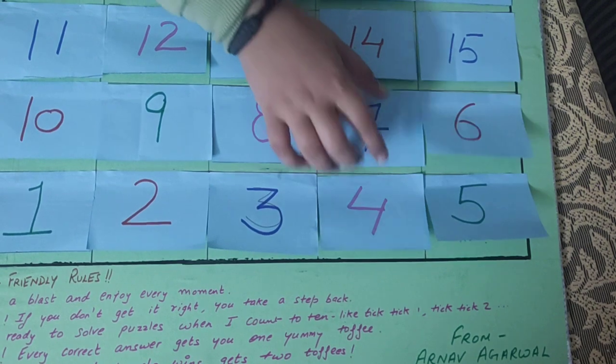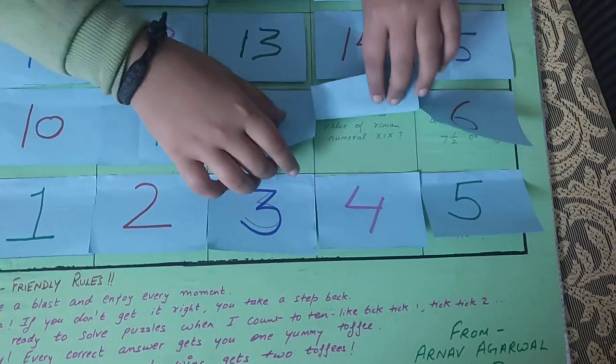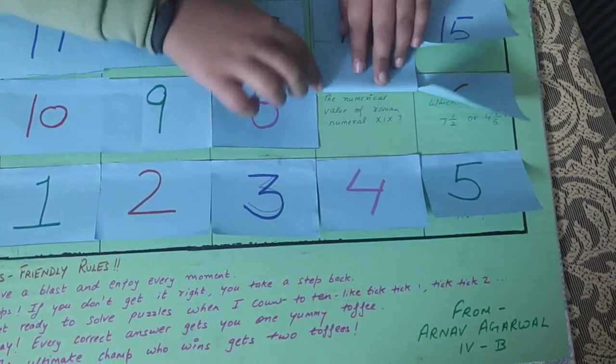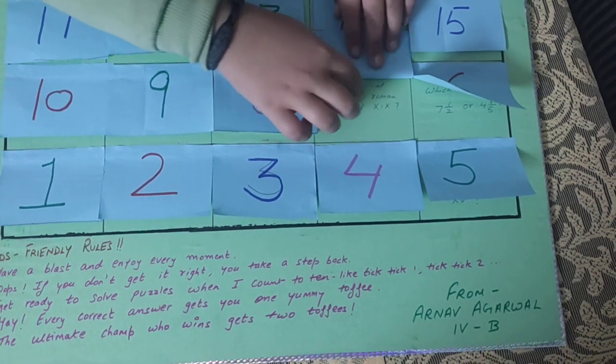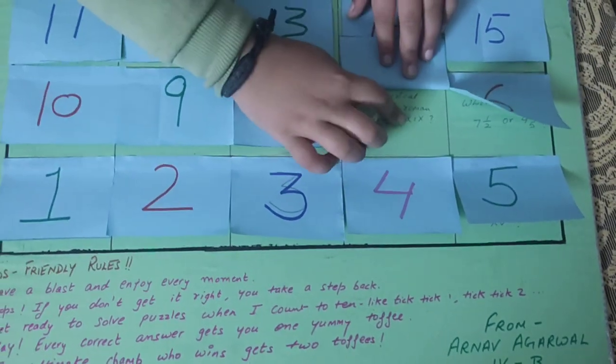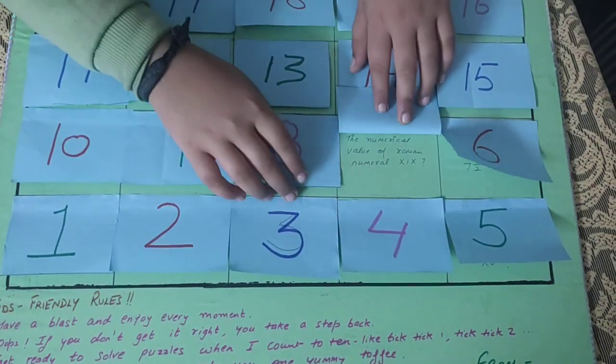Let's come to 7th. The numerical value of Roman numeral XIX is which one?